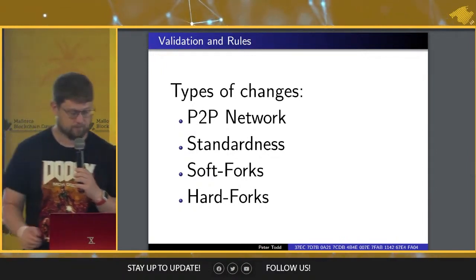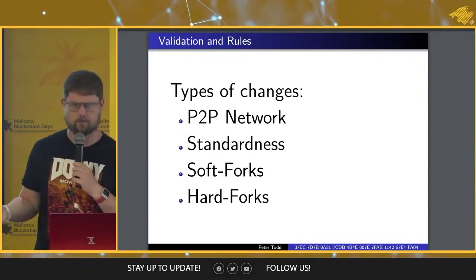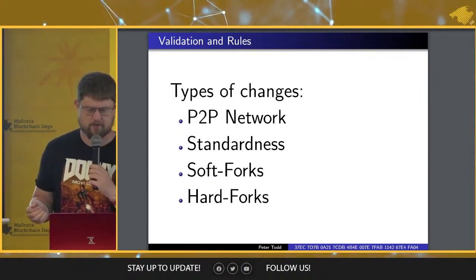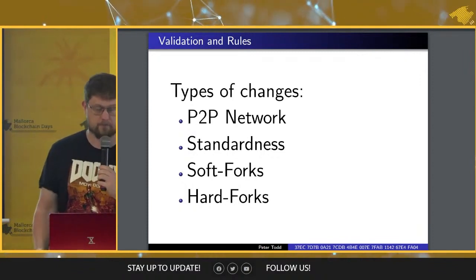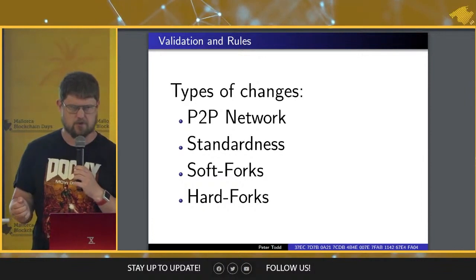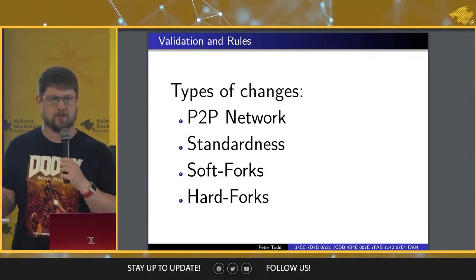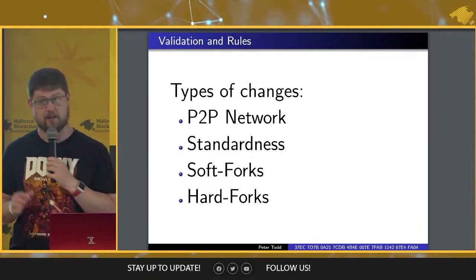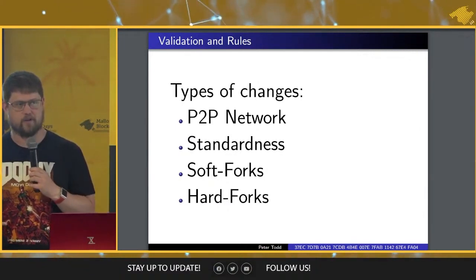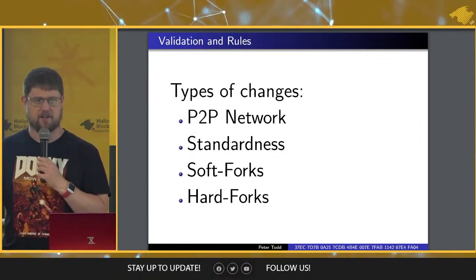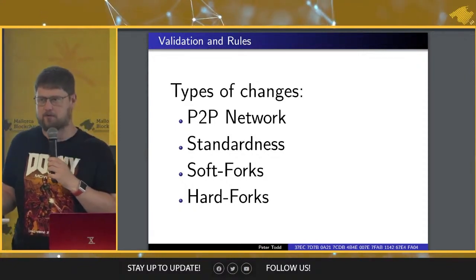So then you get the question: what kind of changes are allowed? If you're applying rules, what are the categories? One covers how data passes around — the peer-to-peer network protocol. There's also the concept of standardness: what sort of transactions are considered standard, meaning what we will pass around by default. This isn't necessarily everything that's allowed, but what's standard. As Bitcoin has progressed, the rules around standardness have gotten more and more niche and less important.